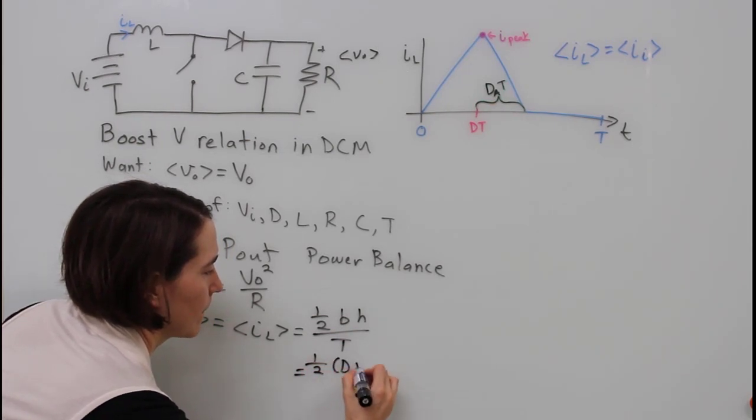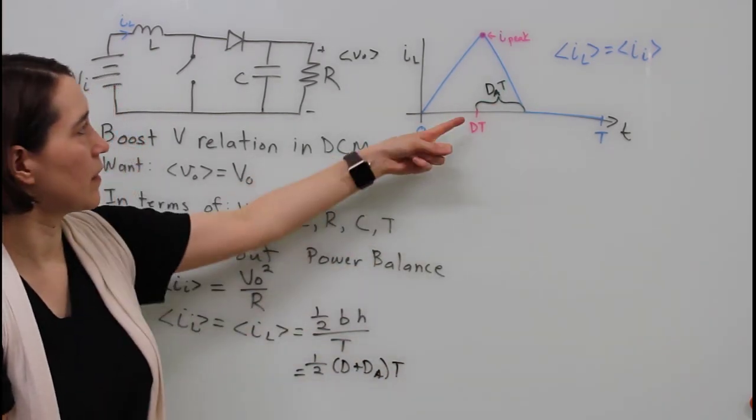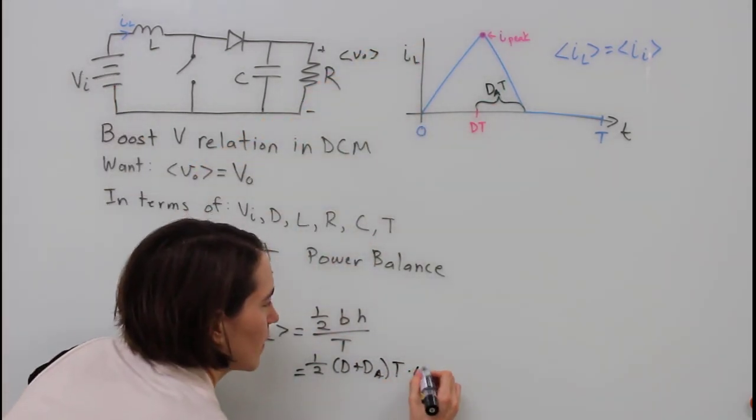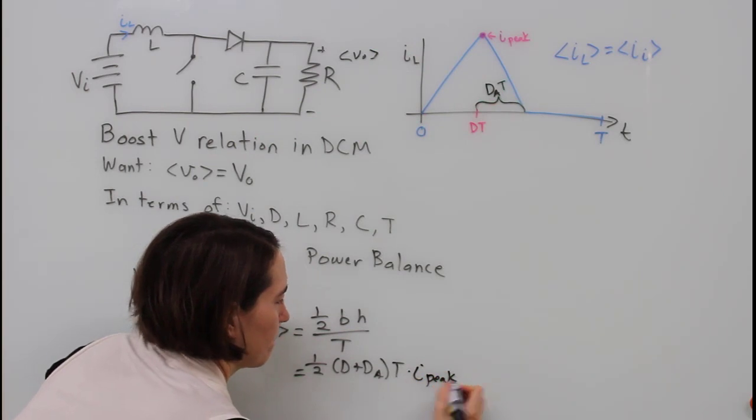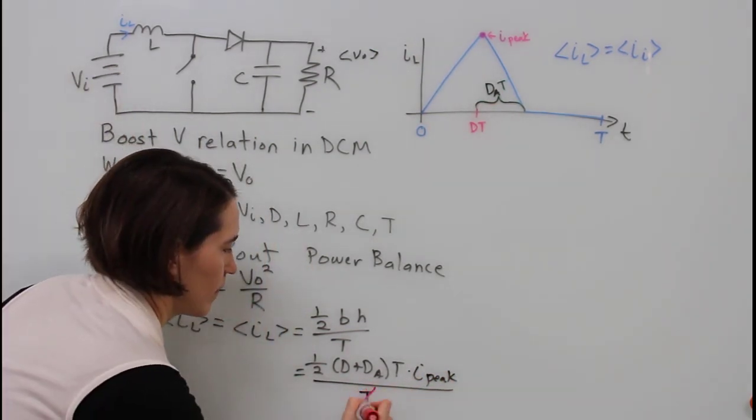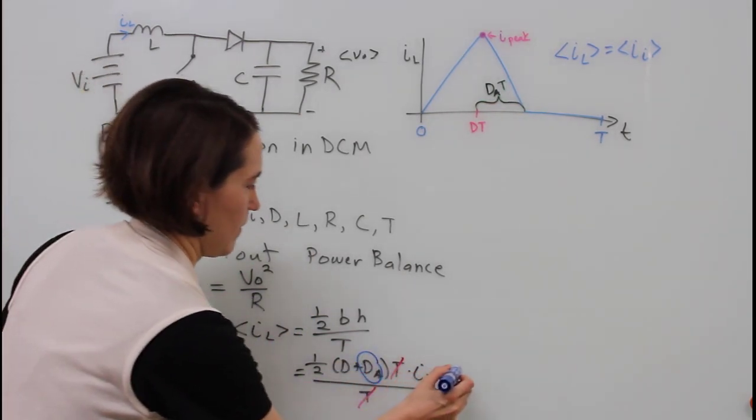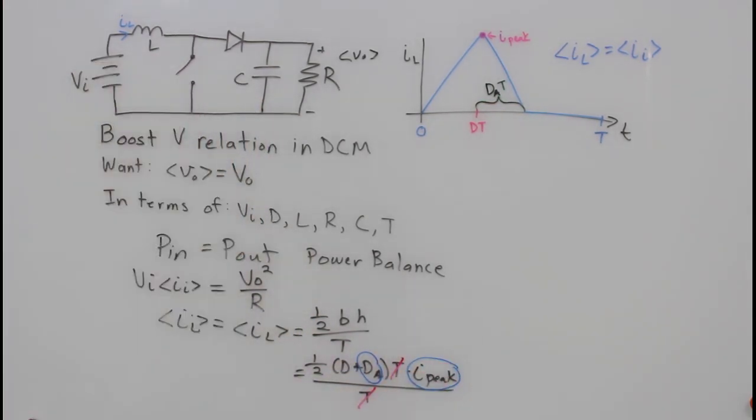Divided by its period over T, so one half and then the D is the on time, D plus the decreasing D, the Da times T, times the peak value. We get some terms that cancel out and we have some new terms that we still need to replace. So Da and I peak need to be put in terms of things that we know.